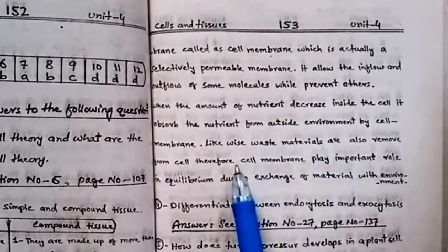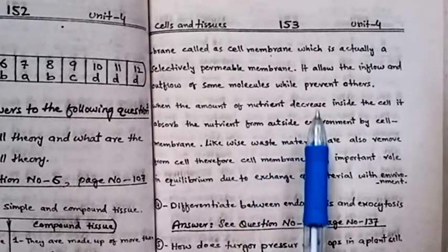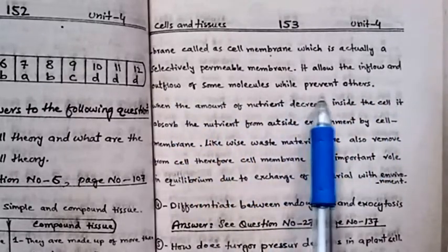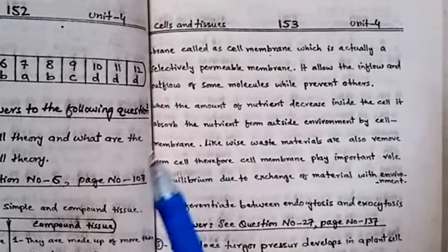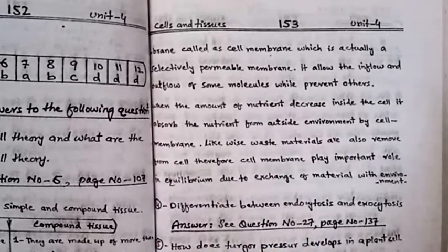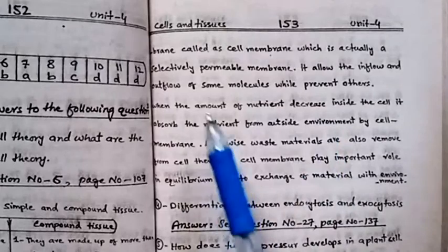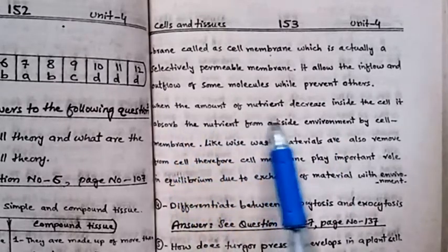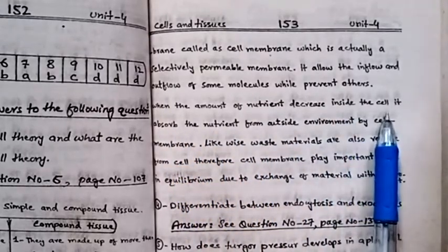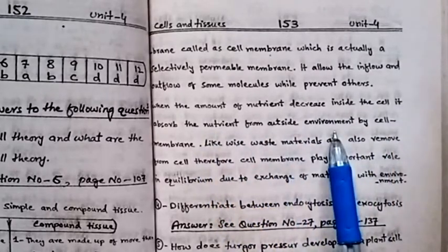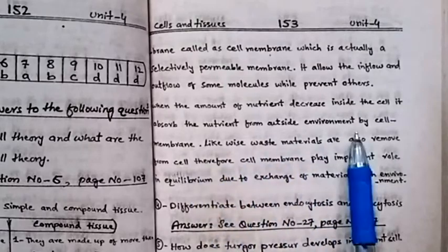It does not allow the inflow and outflow of some molecules while preventing others. When the amount of nutrients decreases inside the cell, it absorbs the nutrients from the outside environment by the cell membrane.